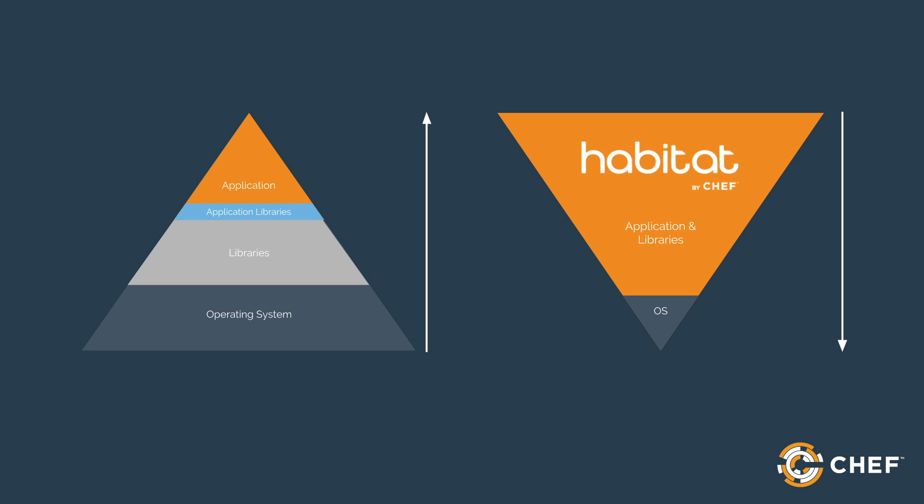On the other side of the diagram, we see how Habitat flips this paradigm on its head. With Habitat, you can package all of your application's service layer dependencies, along with its runtime and build time dependencies, in a single artifact that can be deployed to whatever operating system makes sense in whatever environment makes sense. This flexibility means people working with legacy systems can still modernize while avoiding bulky, high-risk rewrites of their code base.